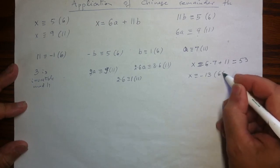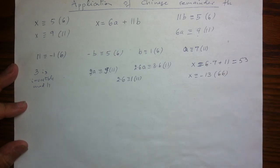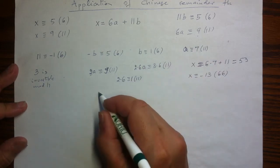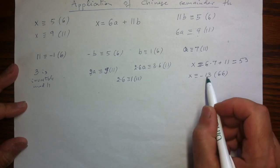Because subtracting 66 out of 53, I will have negative 13. So I will just finish with checking, with verifying that this is the correct answer.